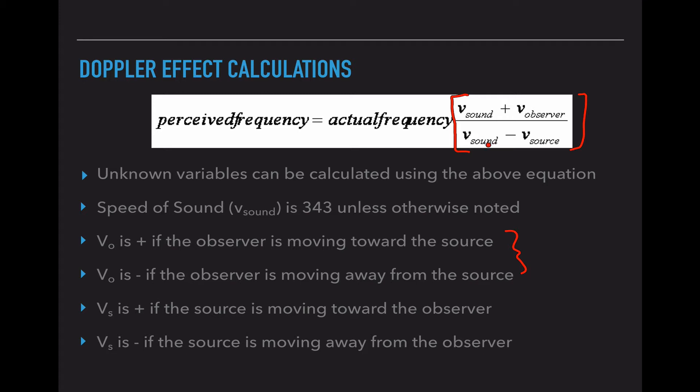Same for the bottom. The velocity of sound is 343 unless otherwise noted. This minus sign is always going to stay the same, but if the velocity of the source is moving towards the observer, we are going to add a plus sign in front of the numerical value of that velocity. So if it's 10 meters per second, I'm going to put plus 10 meters per second in this area. If it's moving away from the observer, I'm going to put a minus 10 meters per second in this area. And what that does is creates like a double negative. And if we have two subtractions, a subtraction sign and a minus sign, we are actually going to end up adding it.